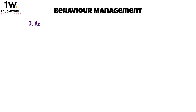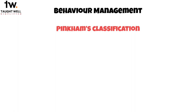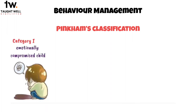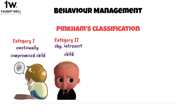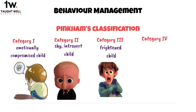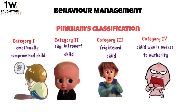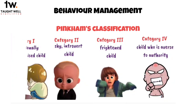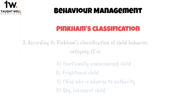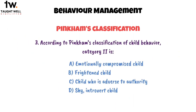To answer this we need to know Pinkham's classification of child behavior. According to this classification there are four categories: category 1 is an emotionally compromised child, category 2 is a shy introvert child, category 3 is a frightened child, and category 4 is a child who is adverse to authority. So the correct answer for this question is option D.